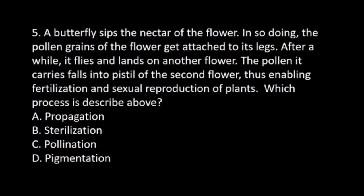Number 5. A butterfly sips the nectar of a flower. In so doing, the pollen grains of the flower get attached to its legs. After a while, it flies and lands on another flower. The pollen it carries falls into the pistil of the second flower, thus enabling fertilization and sexual reproduction of plants. Which process is described above? A. Propagation. B. Sterilization. C. Pollination. D. Pigmentation. The answer is C. Pollination.